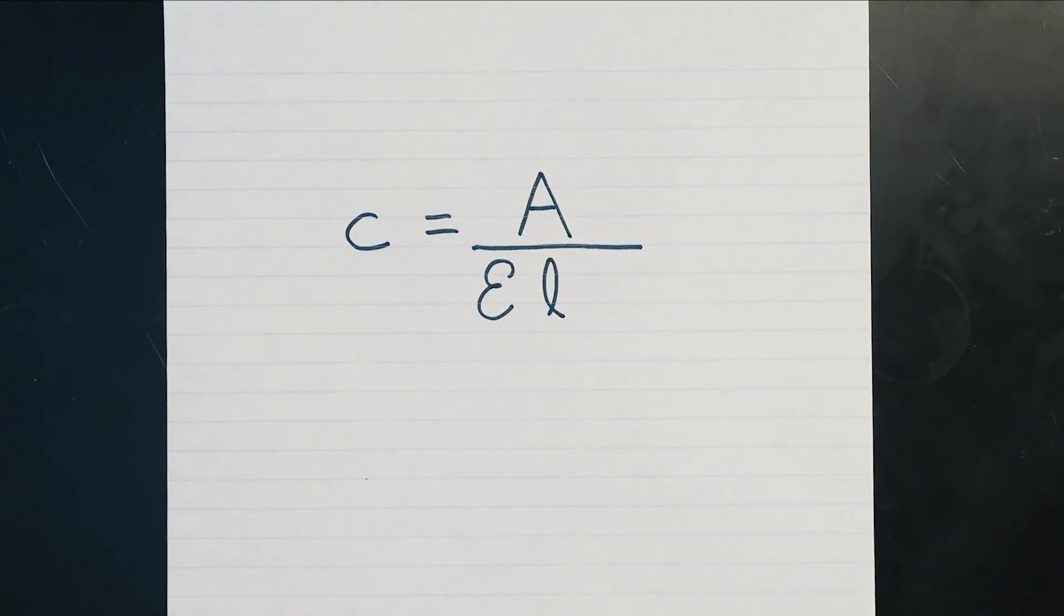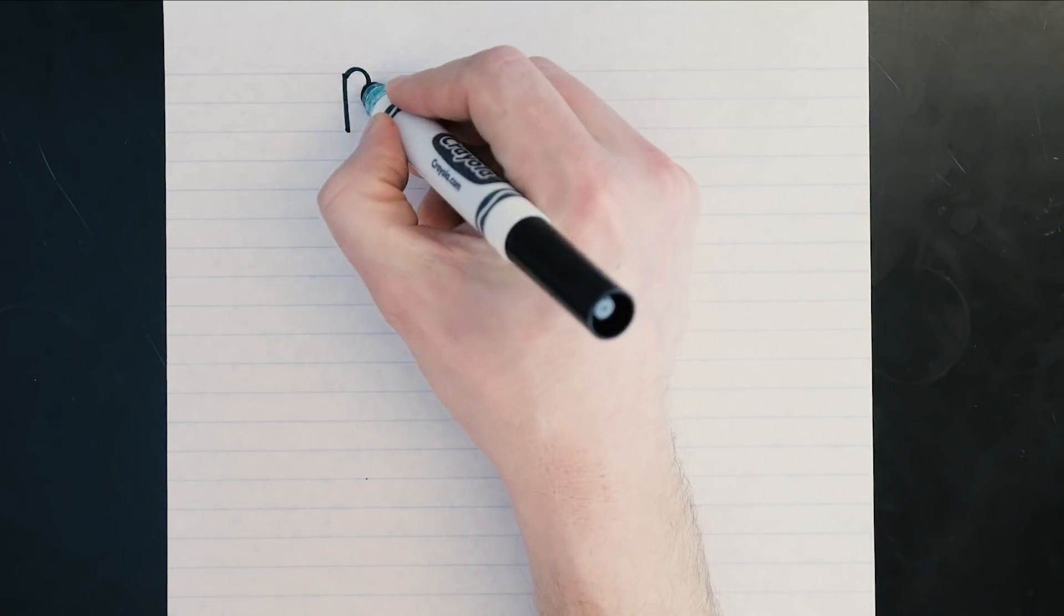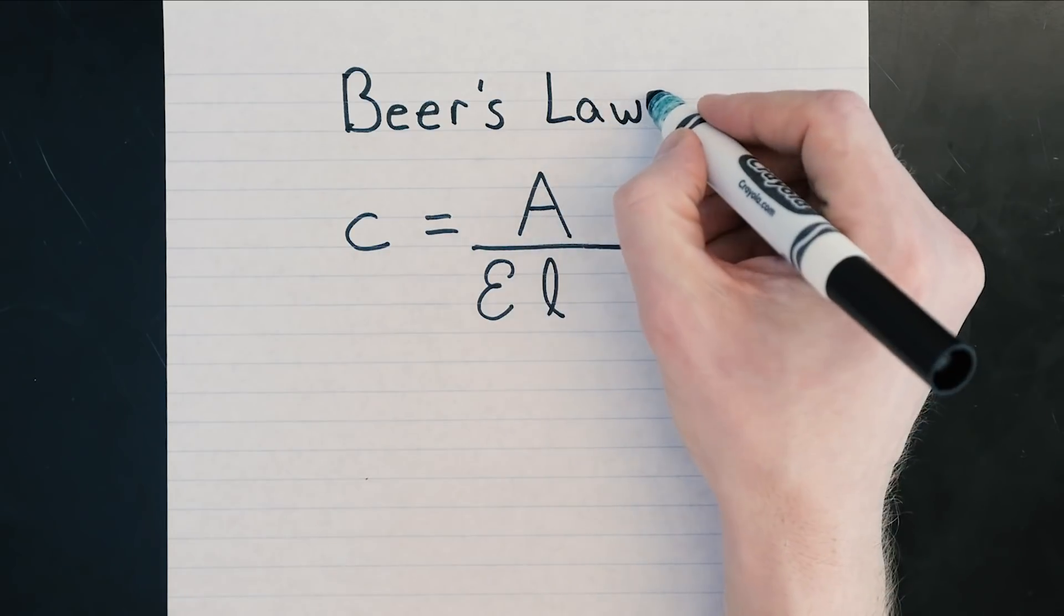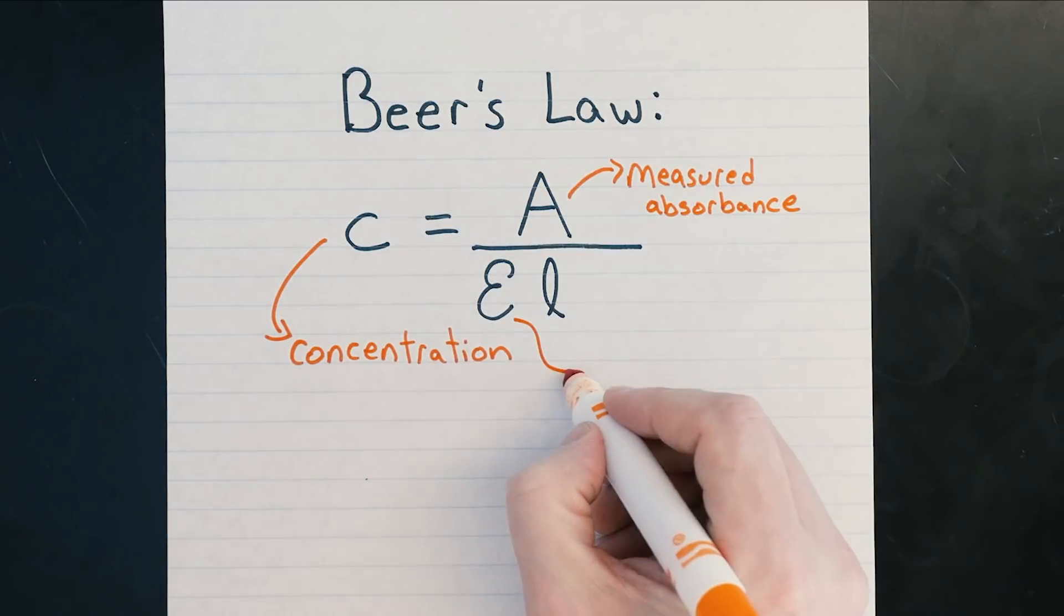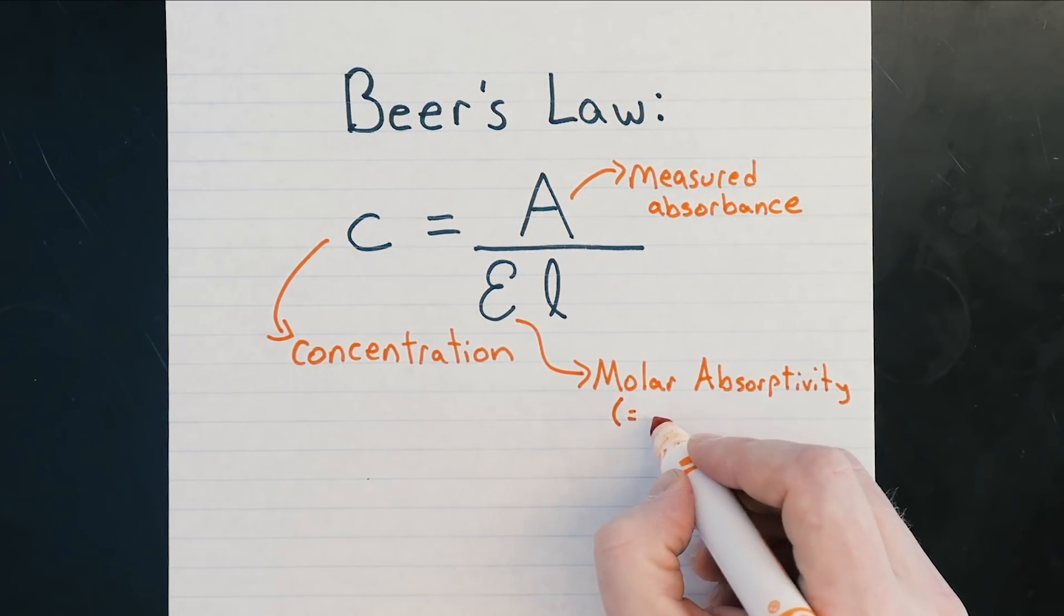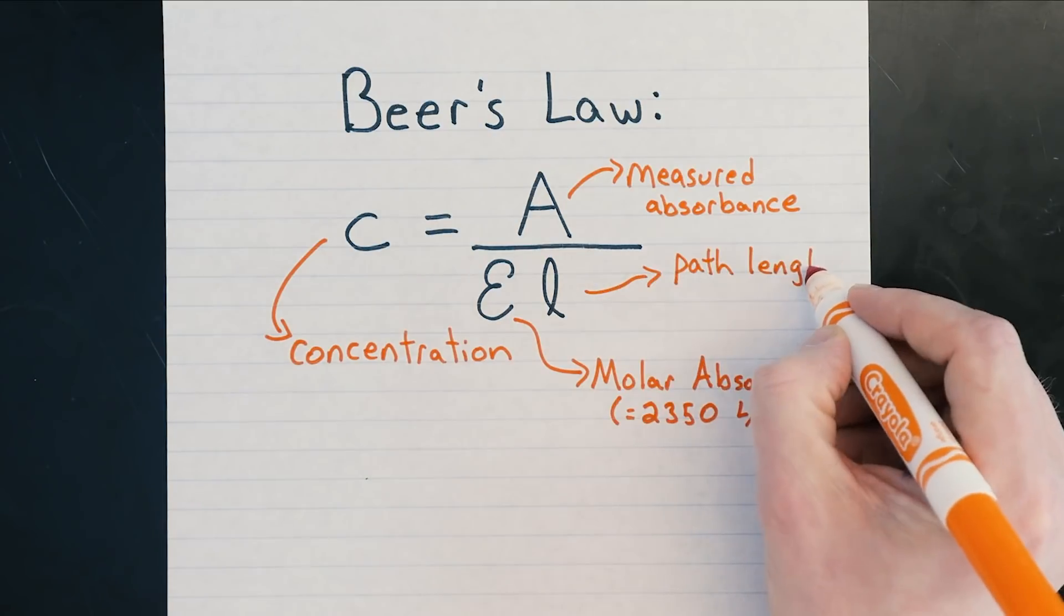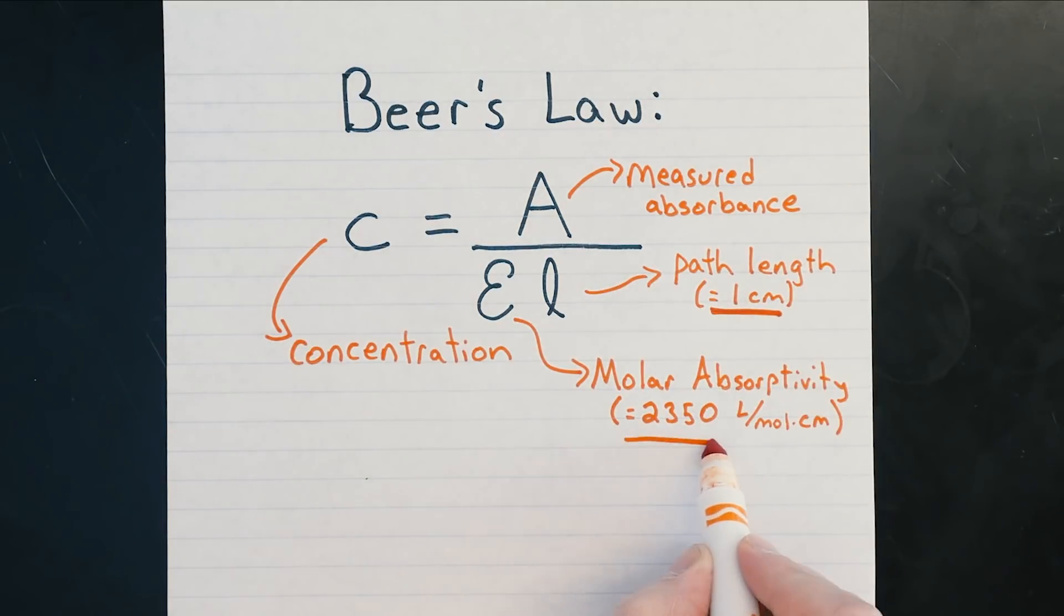From our experimental data, we can calculate the concentration of permanganate using Beer's law, which states that the concentration of our sample is equal to the absorbance measurement we recorded divided by constants called the absorptivity of our sample and the path length of the cuvette, both of which are known. We can therefore use this equation to convert all of our absorbance measurements directly to concentrations and subsequently get the natural logarithm of each.